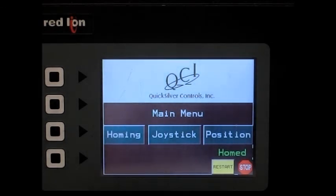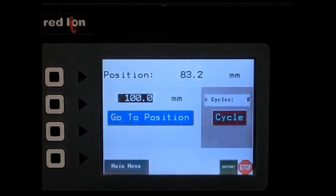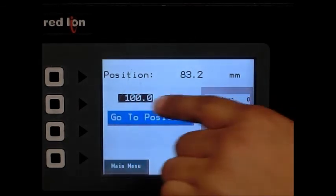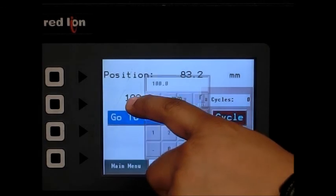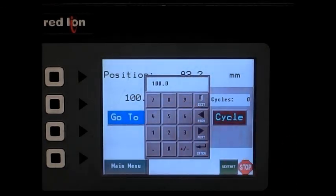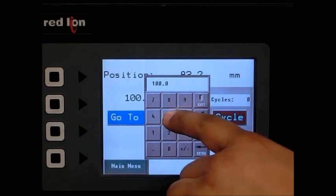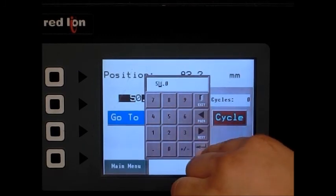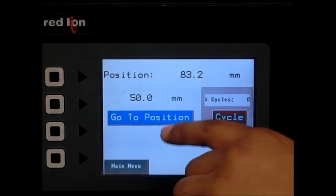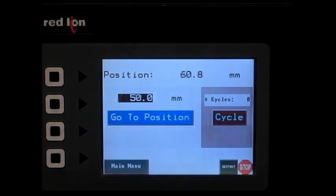We'll go back to the main menu and we'll go to the positions function. In the position function, we can instruct the motor to go to a specific position. So we'll go ahead and enter the position. So we'll give it a position of 50 millimeters and hit the go to position button.